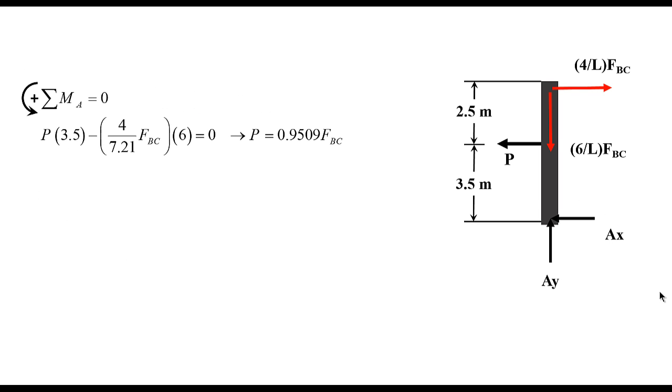The next step now is to take the summation of the moments about point A, and assuming that counterclockwise direction of the moment should be positive. So, let's start. We have P multiplied by 3.5, and that's going along the positive assumption, which is counterclockwise. Minus, because the force 4 over L FBC will cause a clockwise moment about point A. So, that's the minus sign. So, it's 4 over L, which is 7.21 times FBC multiplied by the distance 6, which is the total length of, or the total height of the pole.